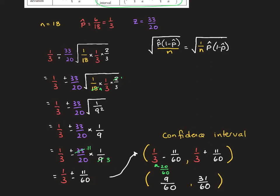So our confidence interval is one third minus 11 on 60, and one third plus 11 on 60. Converting to a common denominator: one third equals 20 on 60. So 20 on 60 minus 11 on 60 equals 9 on 60, and 20 on 60 plus 11 on 60 equals 31 on 60. That's how you calculate confidence intervals by hand. My suggestion: steer away from leaving the standard deviation in the nested fraction form — if you pull 1 on n out the front, you have straight multiplication of fractions, which is simpler and less error-prone.